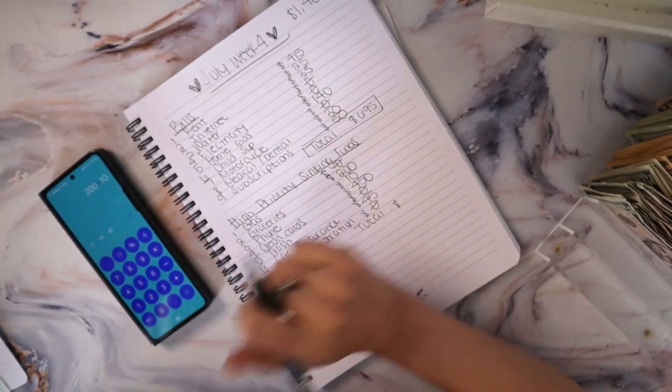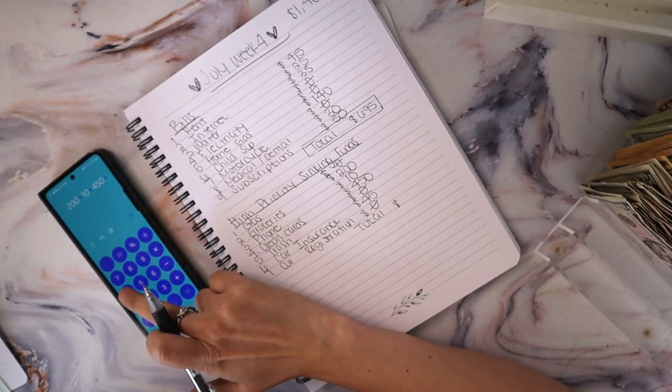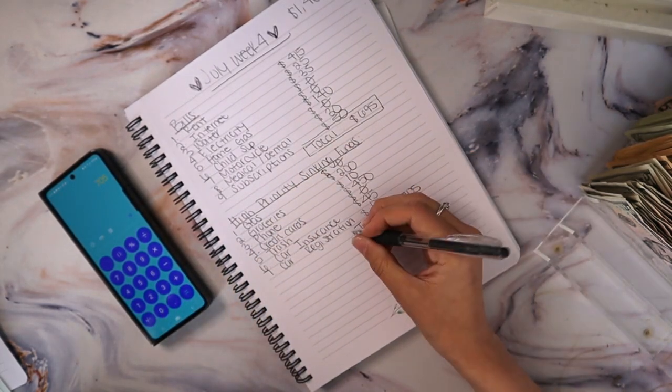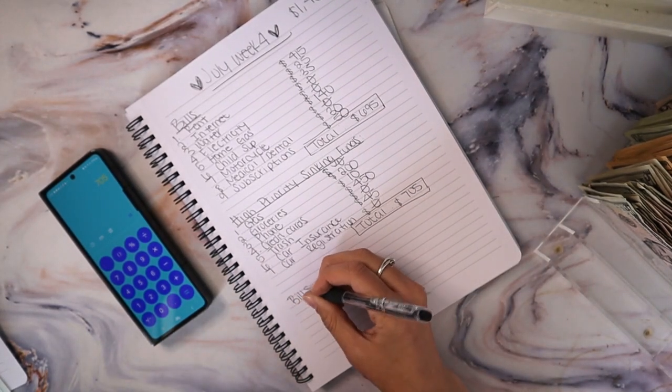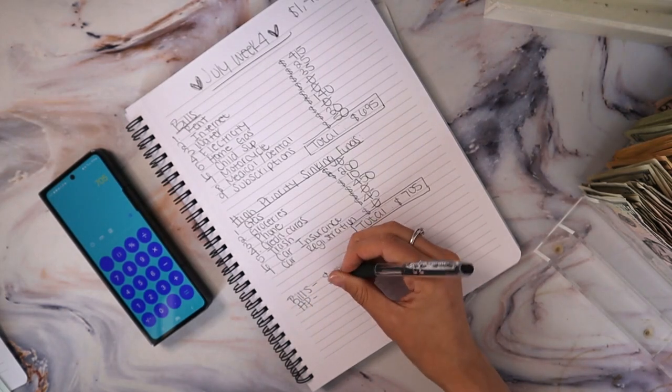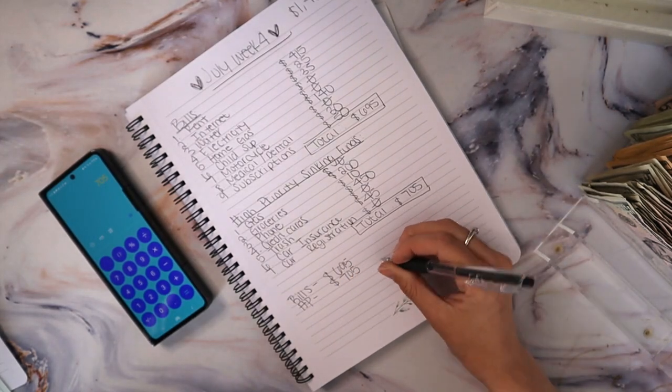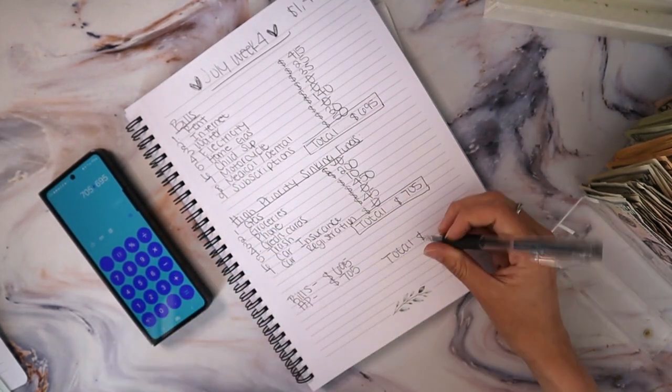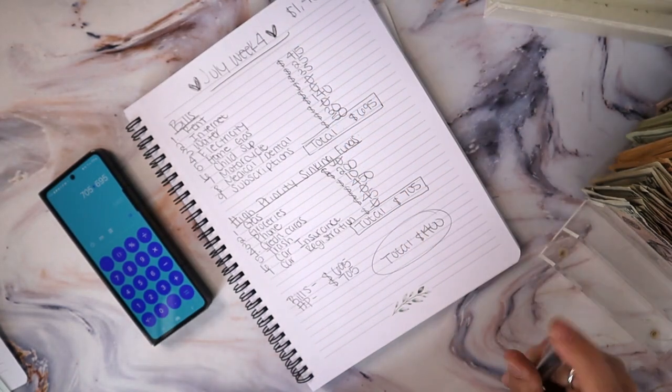So we got $200 plus $10 plus $450 plus $45 equals $705. All right. So then we got, let's calculate this together. Make sure it adds up. So I got bills, high priority sinking funds. So my bills are $695. My high priority sinking funds are $705, which gives us $705 plus $695, $1,400, which matches what we were budgeting with.